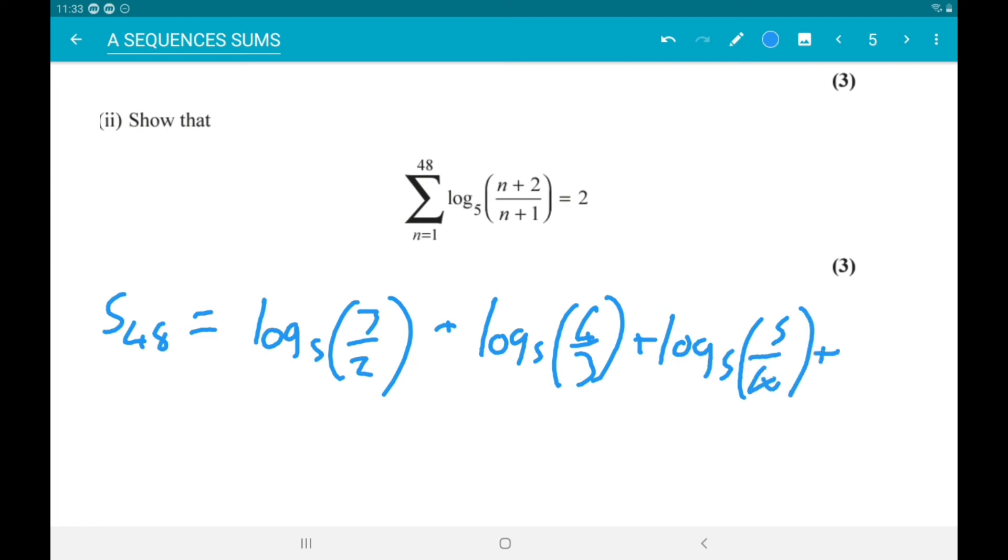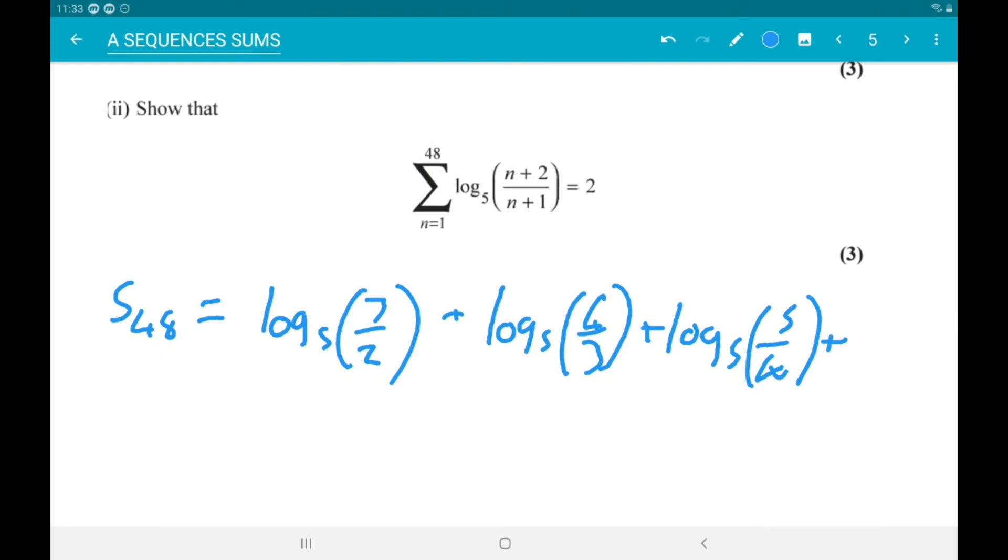And then we're gonna have a log 5 over 4. So that's gonna carry on until we get to the final term, which is gonna be log of 50 over 49. Alright, now, when we add logs together, we multiply the insides.